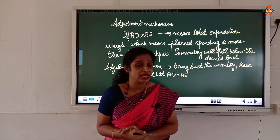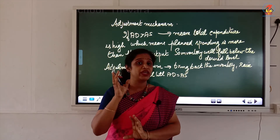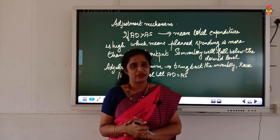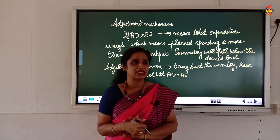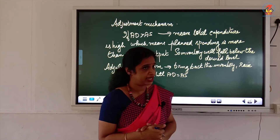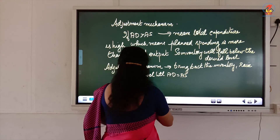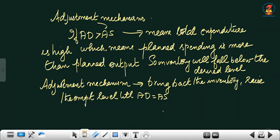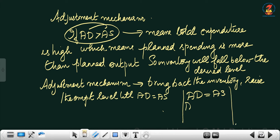Classical economists argued the economy works only at full employment, but it can also happen at less than full employment — which will be covered in detail later. Now, if AD is greater than AS, it means total expenditure in the economy is high. People are planning to buy more than what is being supplied.